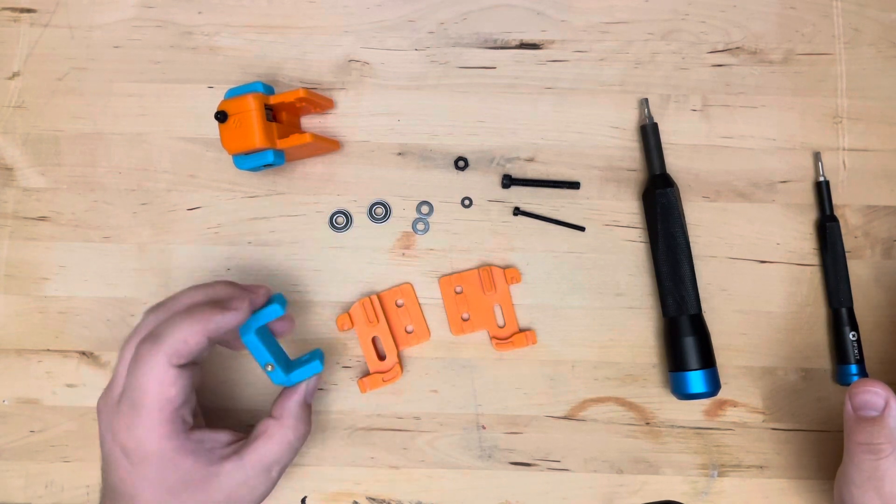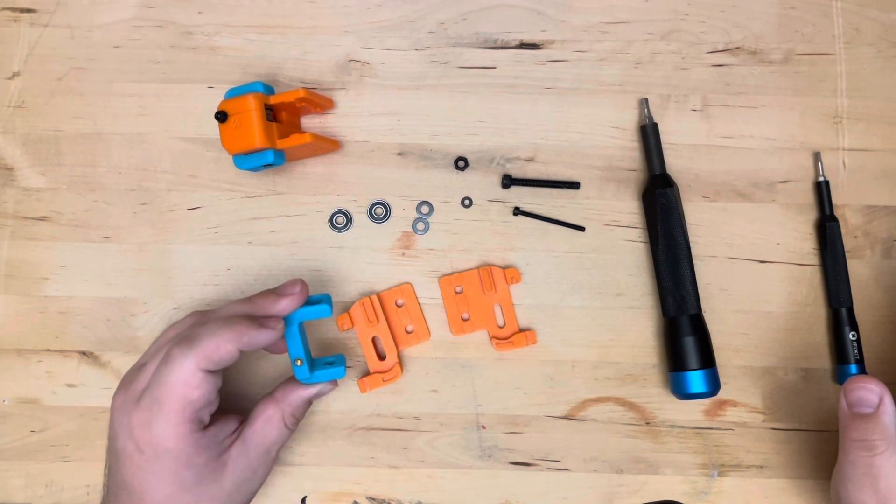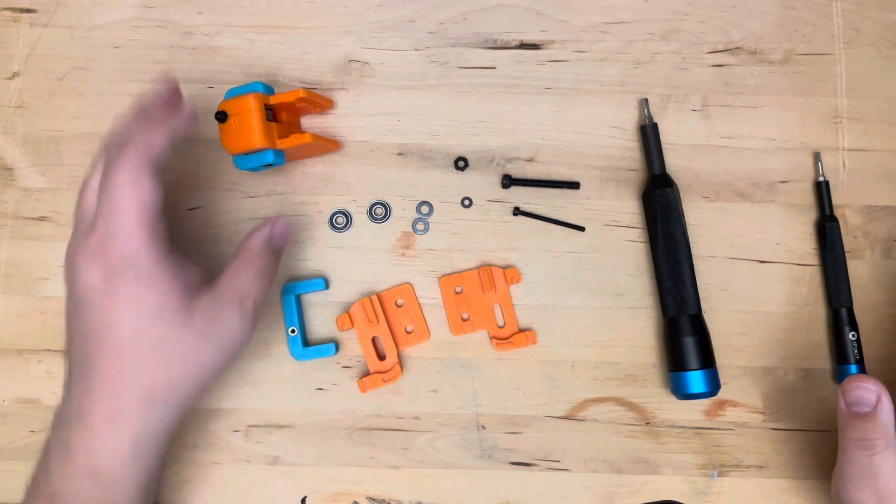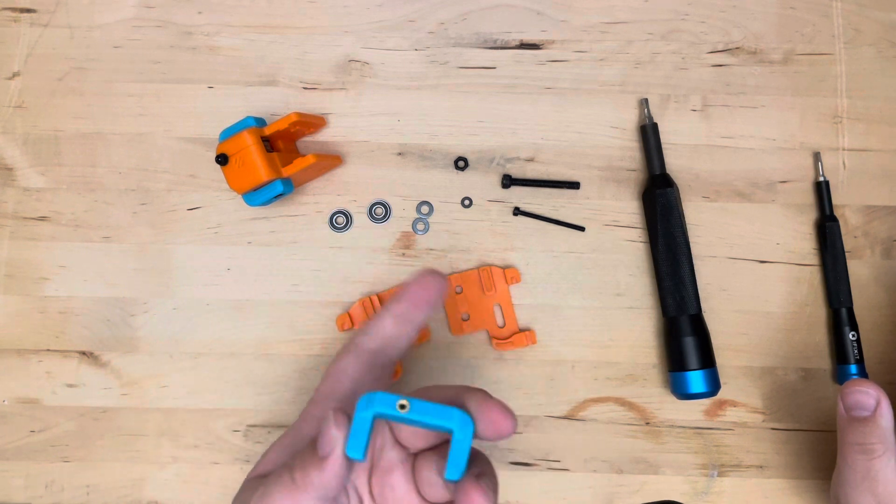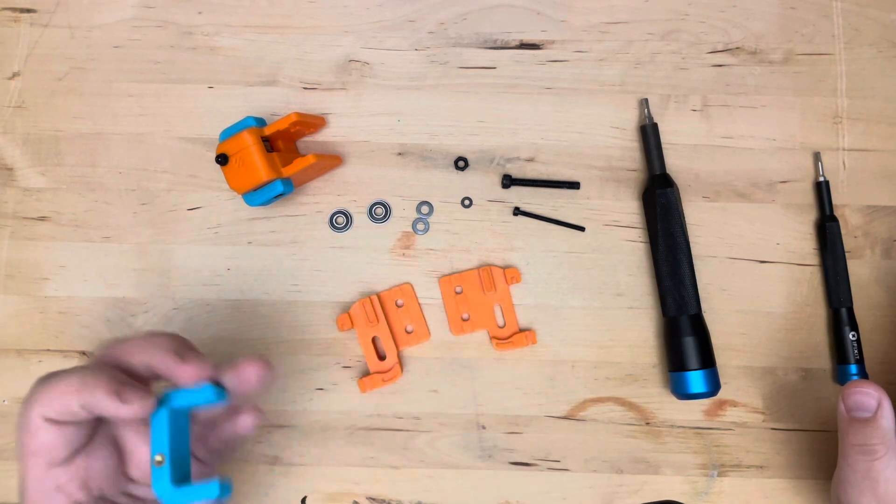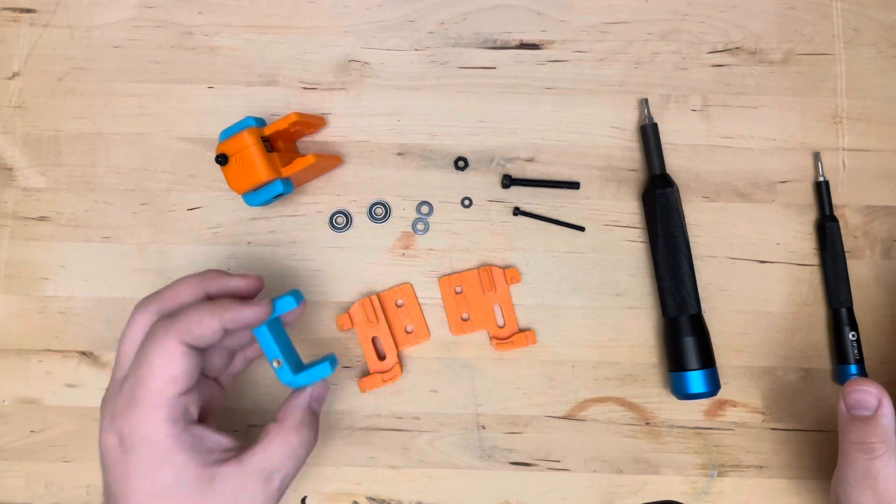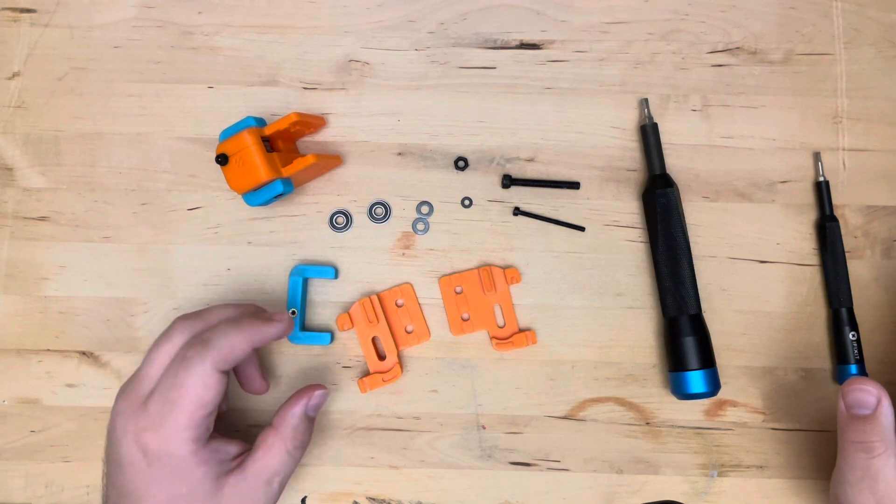And the tensioners are actually mirrored, to account for the fact that the assembly will be mirrored. So you're going to need to print one of each of these files. They look very similar, but once you get to assembly, you'll notice the little differences.